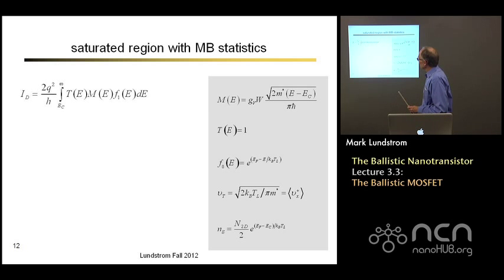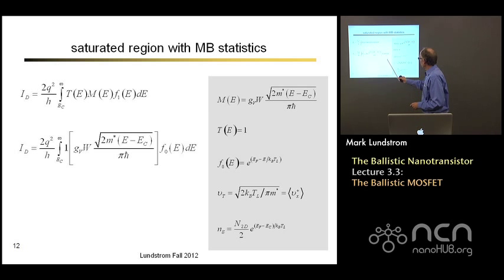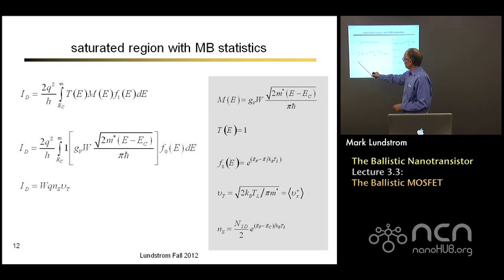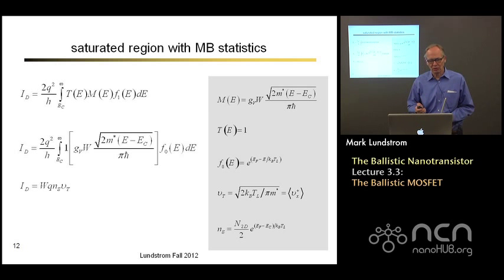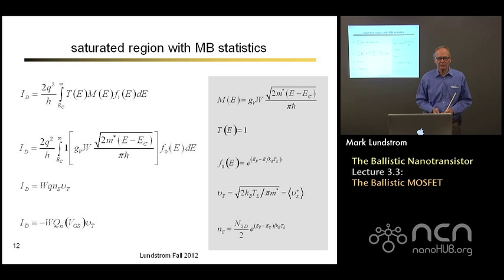Now we do the algebra. We have our drain current expression and expressions for everything inside the integral. Transmission is 1 for ballistic conditions, and the Fermi function is just the equilibrium Fermi function of the first contact. Doing that integral gives: current is proportional to width (which makes sense), proportional to the amount of charge in the inversion layer, and multiplied by the unidirectional thermal velocity. So Q times the sheet carrier density is minus the inversion layer charge, and we have our expression for the high-bias current.